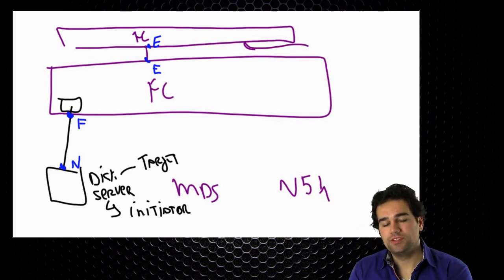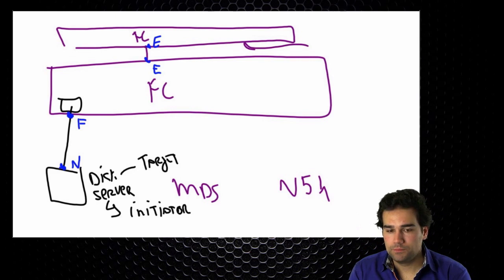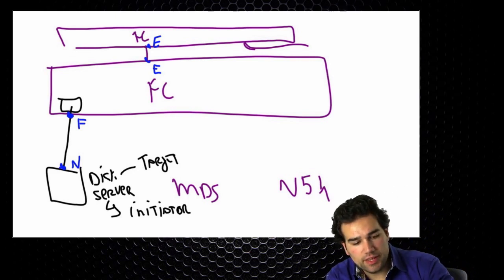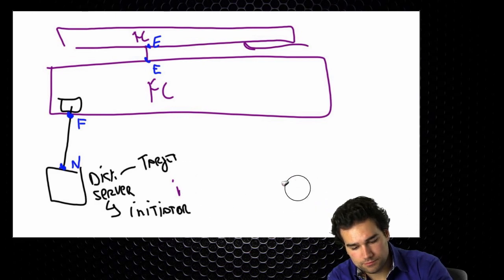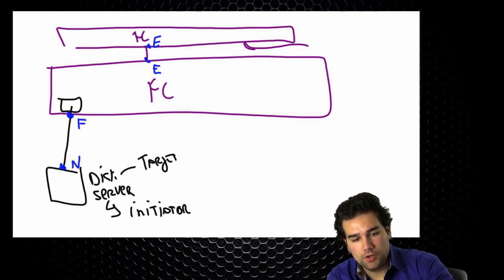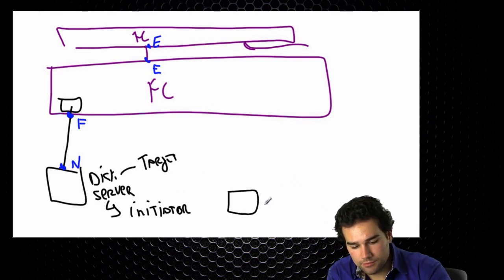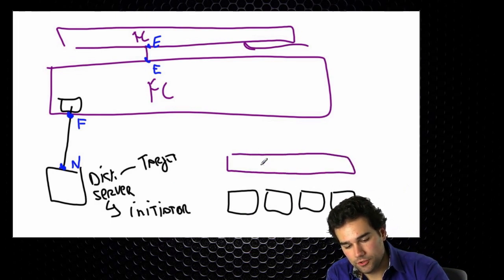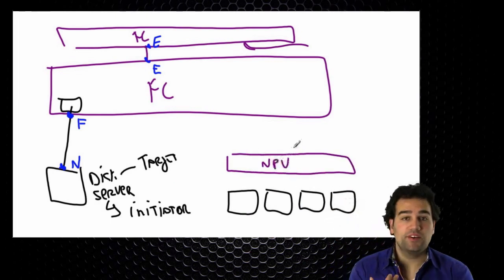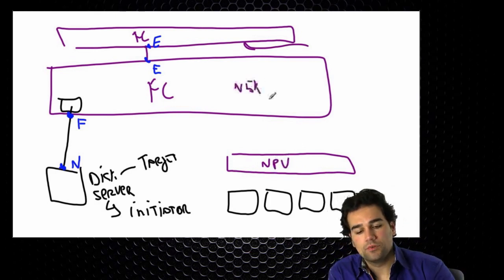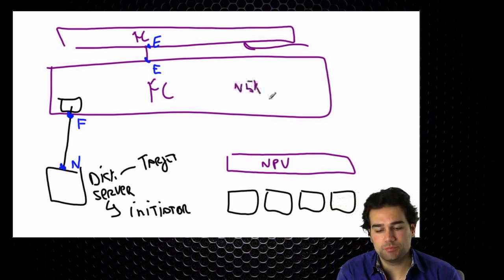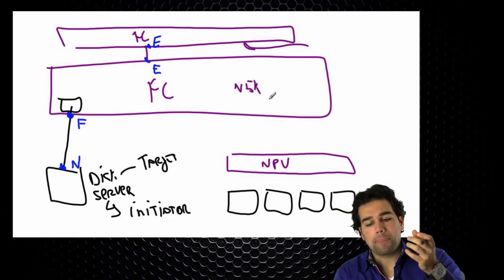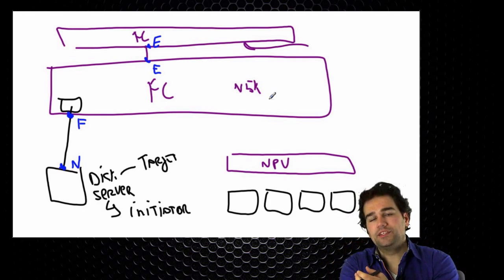When I change the switch to NPV mode, I have a couple of hosts — a couple of initiators. I do not want to waste another domain ID in the network, so I add a fiber channel device called an NPV switch. This is the same device as before — if this is a Nexus 5K, for example, or a cheaper MDS. I need to convert that to NPV mode, because NPV mode is a totally different thing in the fiber channel world.